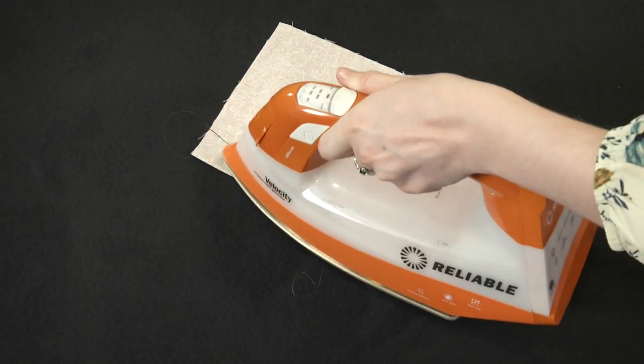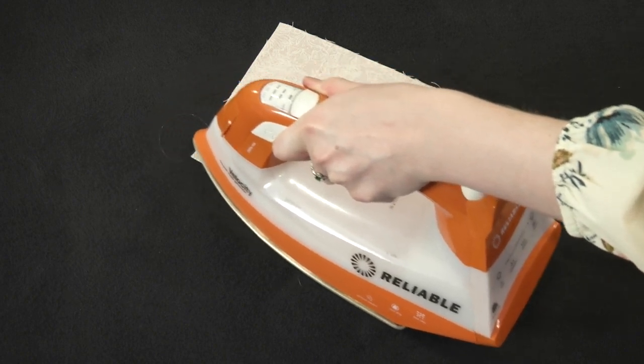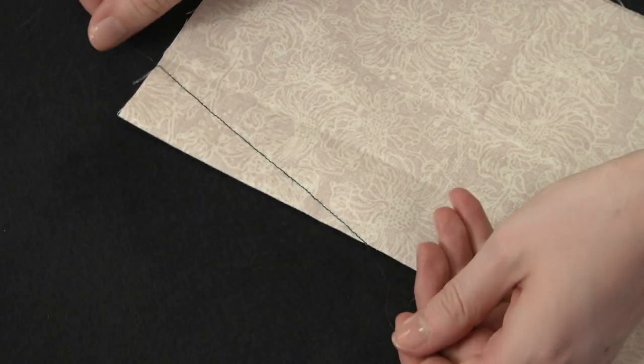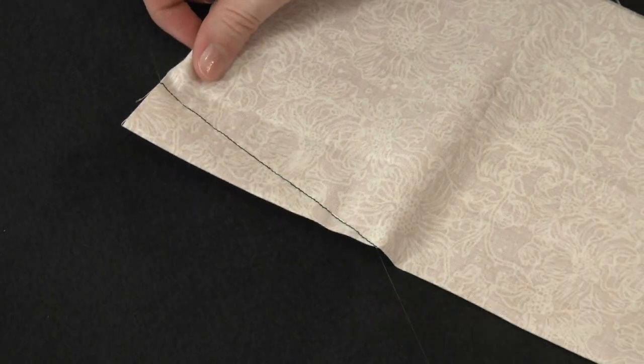Most nylon and polyester threads can be pressed, but test it first to ensure it will not melt on your fabric's required heat setting. When the time comes to remove the basting, you can slide it out of the seam with no effort.